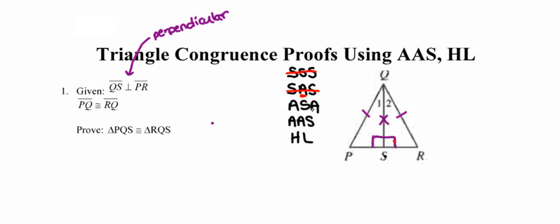ASA requires two pairs of congruent angles, and when I look at this picture we only have one pair — the right angle. AAS also requires two pairs of congruent angles, which we don't have. So hypotenuse-leg: HL requires a pair of congruent hypotenuses. The hypotenuses are always opposite the right angle, so in this case the hypotenuses are PQ and QR, and the legs are QS and QS. I like HL.